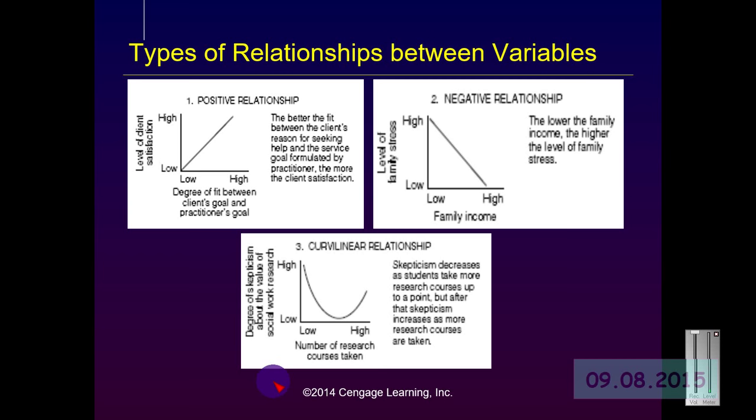Next semester, when we get into quantitative statistics, we will chart the relationship between dependent and independent variables. In this slide we see three examples of linear relationships. Journals will often say there was a positive relationship between the level of drinking and legal difficulties — meaning the more one drinks, the more one gets into legal difficulties. As one variable goes up, the other goes up. In another example, the level of fit between the client's reason for coming to treatment and the service goal formulated by the practitioner positively relates to the level of client satisfaction. When we have a negative relationship, one variable goes up while the other goes down.